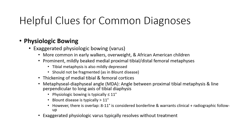Prominent medial proximal tibial and distal femoral metaphysis; tibial metaphysis is also mildly depressed but should not be fragmented, as in Blount's disease. There is thickening of medial tibial and femoral cortex. The metaphyseal-diaphyseal angle is the angle between the proximal tibial metaphysis and a line perpendicular to the long axis of the tibia. Physiologic bowing is typically less than 11 degrees; Blount's disease is typically more than 11 degrees.